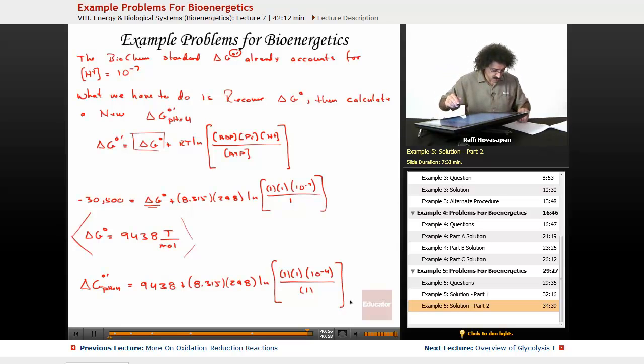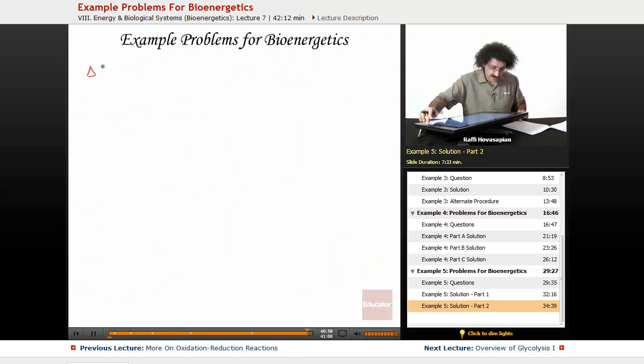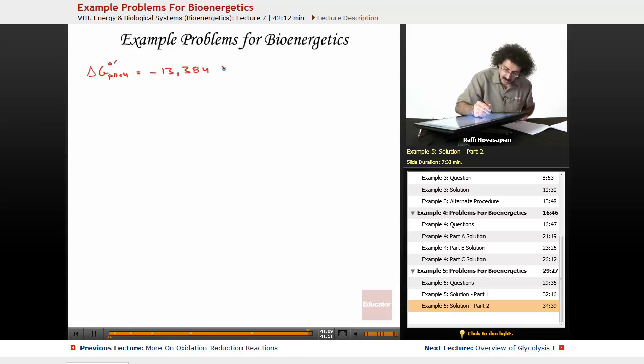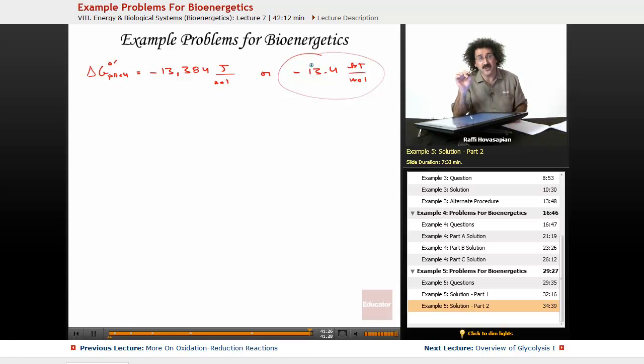When we run this calculation, we end up with the following number. Delta G standard for a pH equals 4 is equal to minus 13,384 joules per mole or minus 13.4 kilojoules per mole.